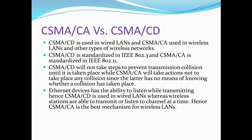Now let's look at the differences between CSMA/CA and CSMA/CD. CSMA/CD is used in wired networks and CSMA/CA is used in wireless networks and other types of wireless networks. CSMA/CD is standardized in the 802.3 protocol and CSMA/CA is standardized in the 802.11 protocol. CSMA/CD will not take steps to prevent transmission collisions until one has taken place, while CSMA/CA will take actions to avoid any collisions since the latter has no means of knowing whether a collision has taken place.